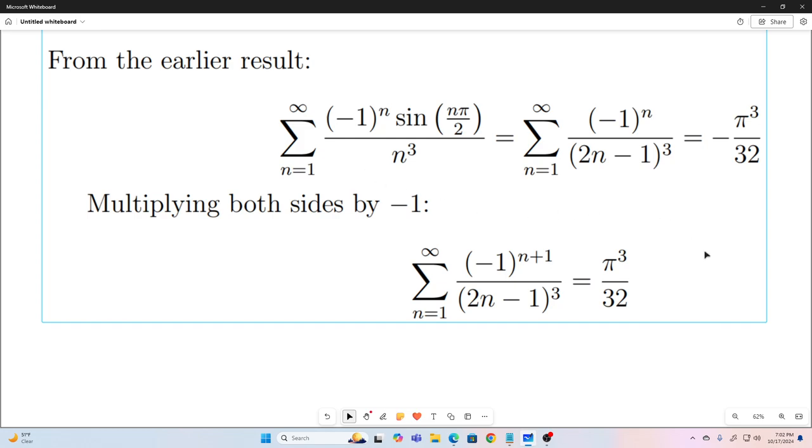And then, all we have to do is multiply both sides by negative 1. And on this side, we'll multiply by negative 1 by adding 1 to our exponent right here. And that's just going to flip the sign. So, we end up with this result. So, that's it. We just derived the result for the alternating sum of the reciprocals of the odd cubes. And that is equal to pi cubed over 32.